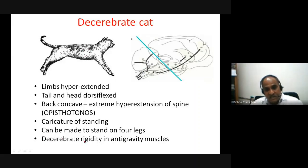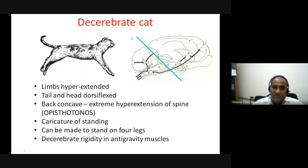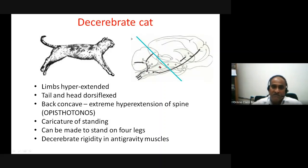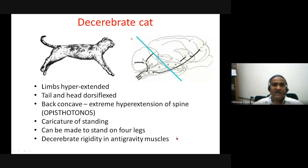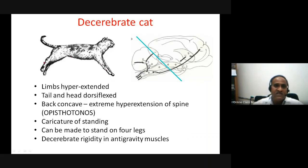Decerebrate rigidity is seen in the anti-gravity muscles — the muscles which act against gravity to support posture. The centers that maintain gravitational aspects of posture are preserved, while the inhibitory/suppressor effect on these centers is absent, so they become rigid. This is called decerebrate rigidity. Decerebrate rigidity is seen predominantly in the extensor group of muscles, since the anti-gravity muscles are mostly extensors. Additionally, muscle tone in these animals was increased.